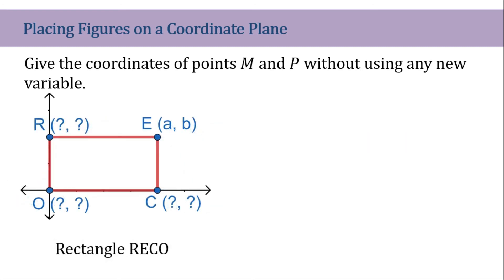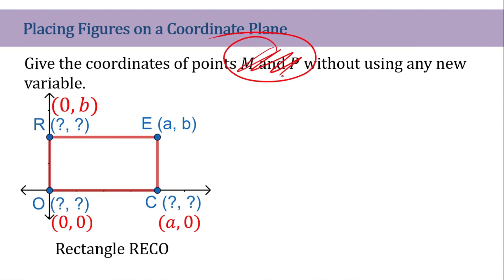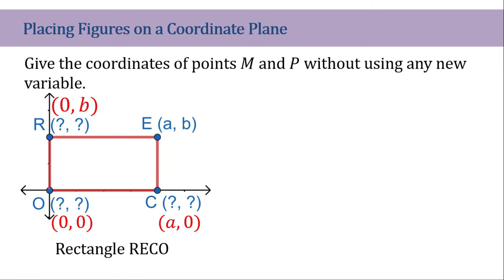Lastly, this is a rectangle RICO. Let's find the missing coordinates. We can say that this will be our coordinates. This is (0, 0) because this is the origin. To get the other point, they share the same Y axis, so the Y coordinate is 0. Since the X coordinate here is A and this is a horizontal line, the X coordinate is also A. This point shares the same X coordinate, so that is 0, and shares the same Y coordinate with E, so that is B. That would be our answer.